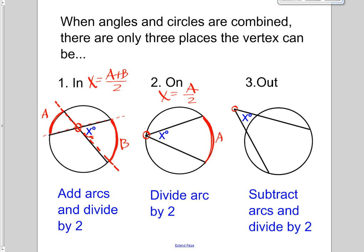Moving on to this last case, I've got an arc out here. I could say it's A. I also have an arc in here that's B. And this one says you're going to subtract them. So if I wanted to find x in this case, I would say it's going to be A minus B divided by two. And as long as you can keep those three situations straight, the problems aren't too complicated.